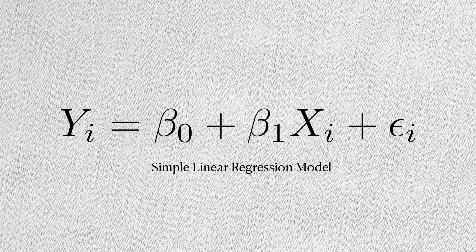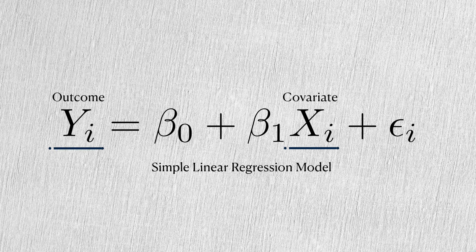For reference, let's look at the simple linear regression model. This model tells us how changes in the covariate x are associated with changes in the outcome y. In this case, both x and y are numbers, and we'll call them scalar values.